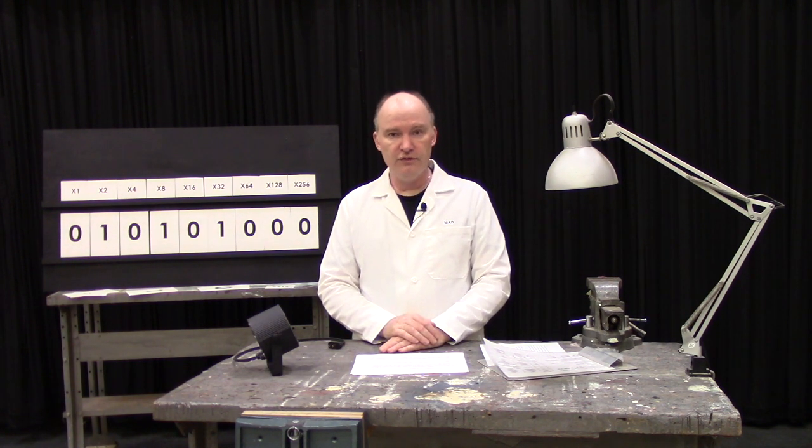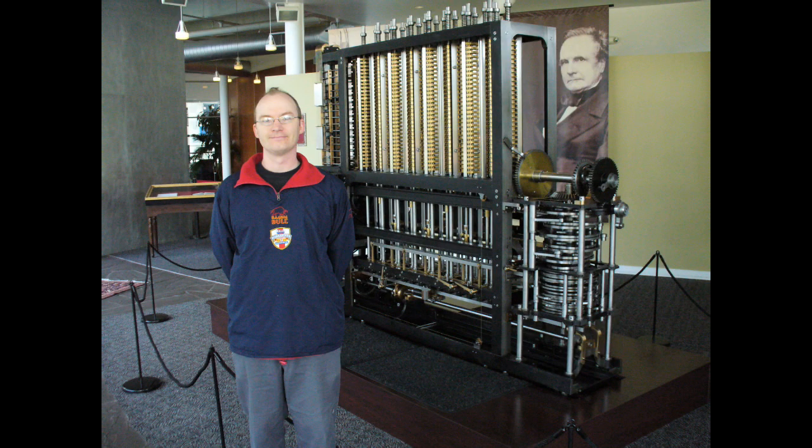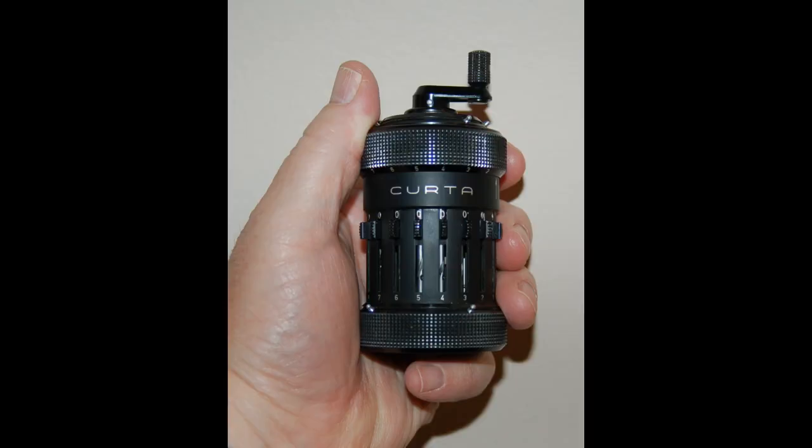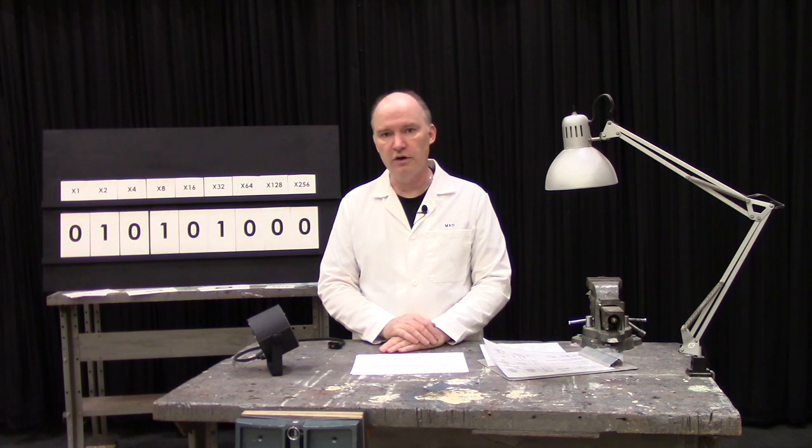We even started building computers that calculated using decimal numbers and mechanical cogs. These ranged from Babbage's difference engine, which was huge and impractical and never actually finished, to the Curta calculator, which was adorable and fit in the palm of your hand and was sold commercially for two decades. Amusingly, they were both hand-cranked, although you were probably less likely to throw your back out using the Curta.